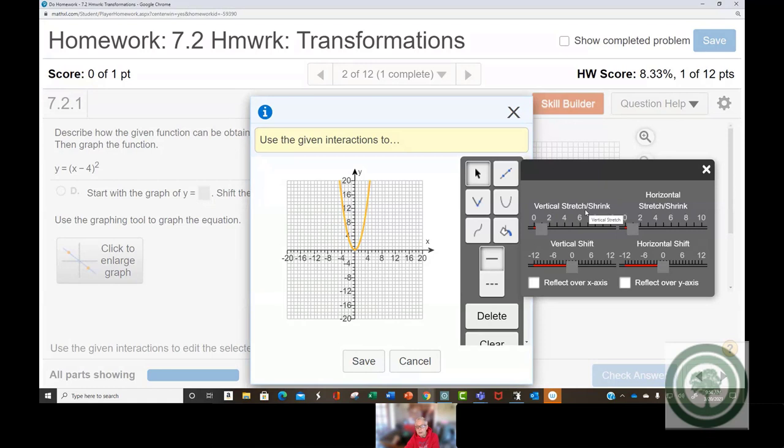You have vertical stretch, shrink, horizontal stretch, shrink, vertical shift, horizontal shift, reflect over the x-axis, reflect over the y-axis. We have only one transformation here. And that is a horizontal shift. Four units to the right.